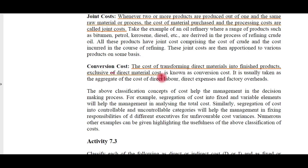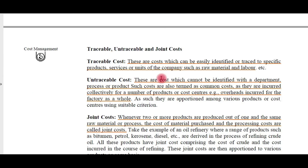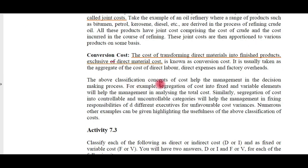The above classifications — variable cost, fixed cost, step cost, direct cost, indirect cost, and many others seen in previous videos — all help the management in the decision-making process. For example, segregation of costs into fixed and variable elements helps the management in analyzing total cost. Similarly, segregation into controllable and uncontrollable categories helps the management in fixing responsibilities of different executives for unfavorable cost variances.